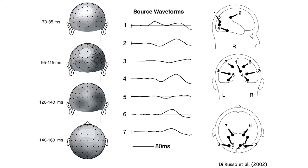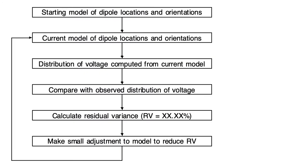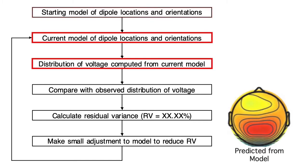The locations, orientations, and source waveforms are estimated by means of an iterative error minimization approach. You typically start with a random set of locations and orientations. On each iteration, you use a forward solution to compute the predicted scalp distribution from the model.